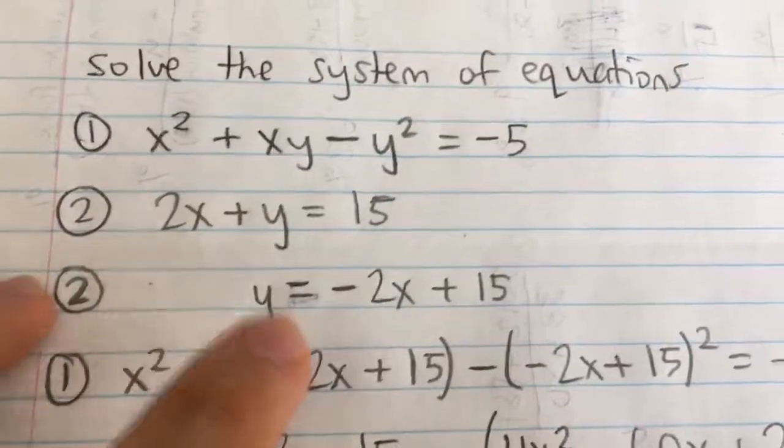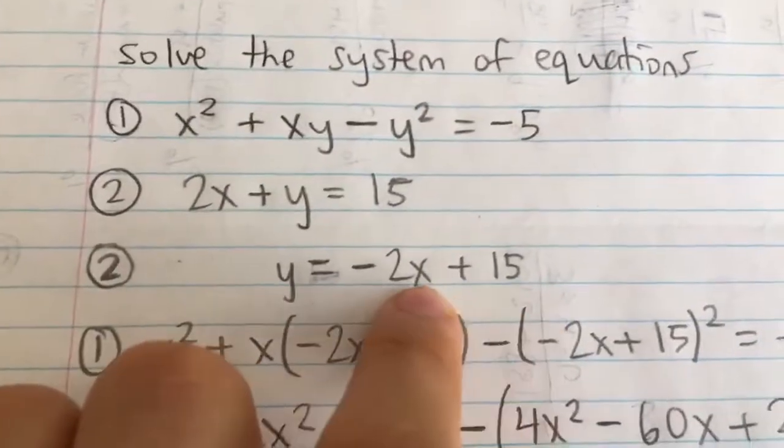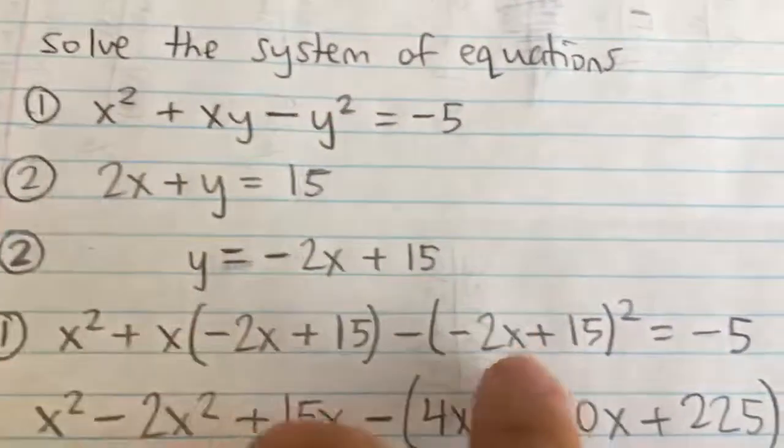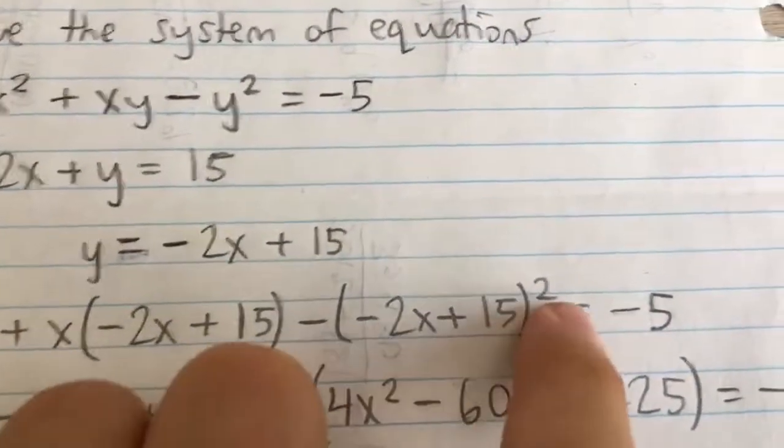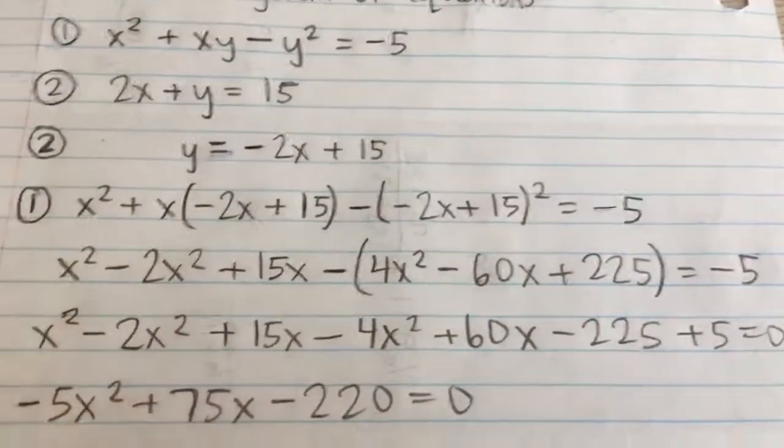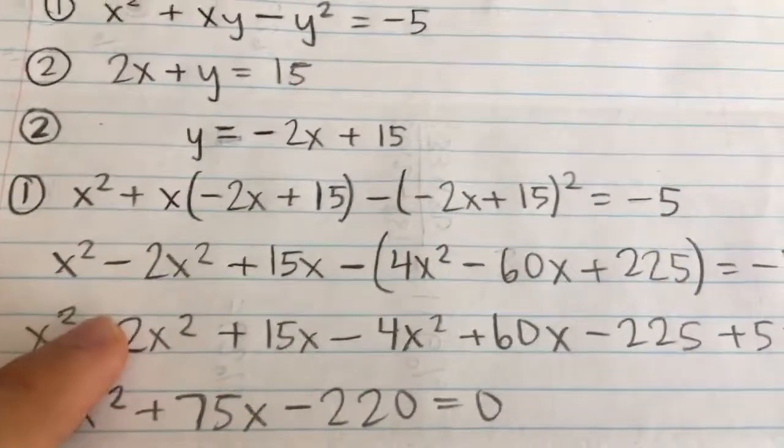Now we can substitute in for y this expression in the first equation. Here I see y, I'm going to plug that in. And also here I see y being squared, so I'm going to plug that in and square it. Now we have an equation all in x and so we can solve it because it just has one variable.